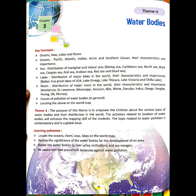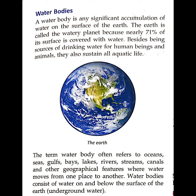So let's start the chapter. A water body is any significant accumulation of water on the surface of the earth. The earth is called the watery planet because nearly 71 percent of its surface is covered with water. Besides being a source of drinking water for human beings and animals, water bodies also sustain all aquatic life.